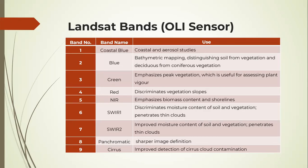The red band is used to discriminate vegetation slopes. The near infrared band for emphasizing biomass content and shorelines. Shortwave infrared 1 discriminates moisture content of soil and vegetation. It also penetrates thin clouds. Shortwave infrared 2 for improved moisture content of soil and vegetation, and it also penetrates thin clouds.